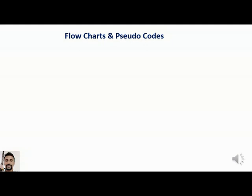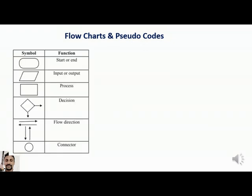This part covers flowcharts and pseudocode, included for both O-level and A-level students. Without good knowledge of this, it will not be possible to write programs in any computer language. An algorithm is a method of showing the steps in solving a problem. This algorithm can be represented graphically with flowcharts and textually with pseudocode.